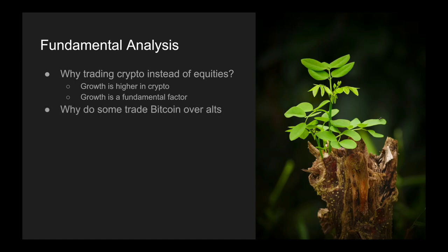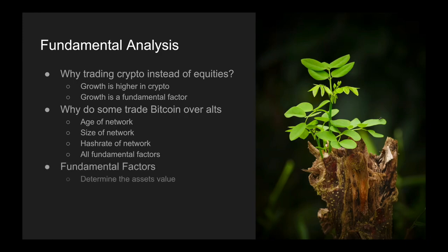Maybe once you've chosen crypto, why do some people trade only Bitcoin over altcoins? If you're looking at the age of the network, the size of the network, the hash rate of the network — once again, these are all fundamental factors. So fundamental factors determine the asset's value, and what we're going to be doing is running them through a model, then trading if the value suggested by our fundamental models is different from the price.